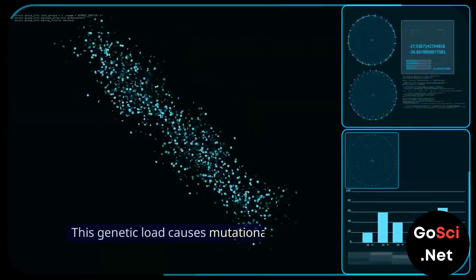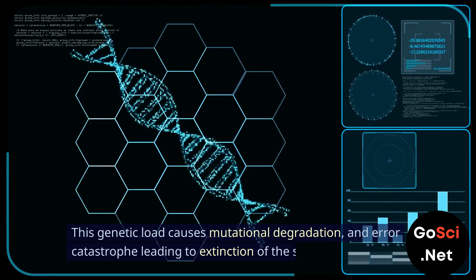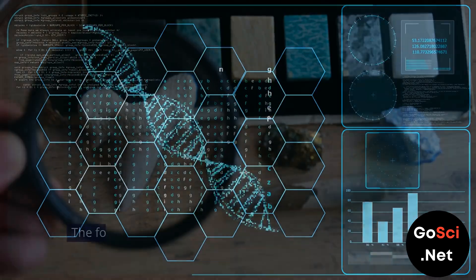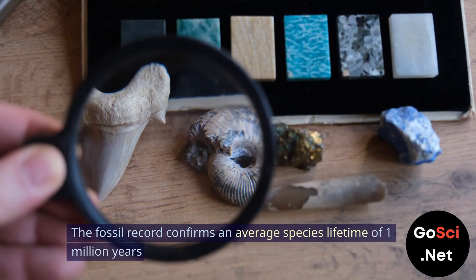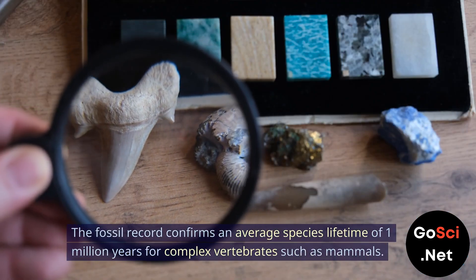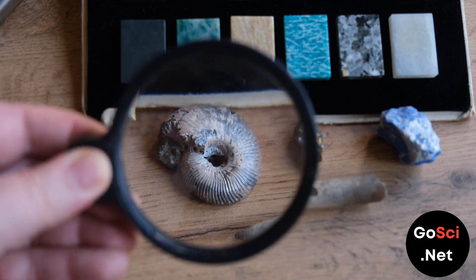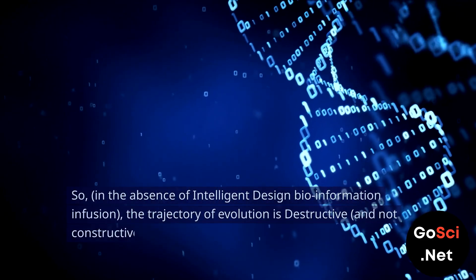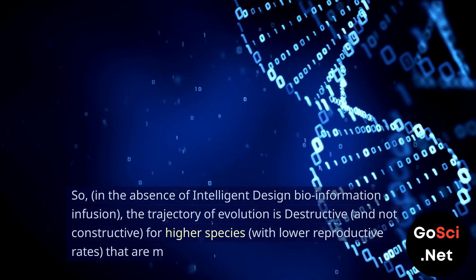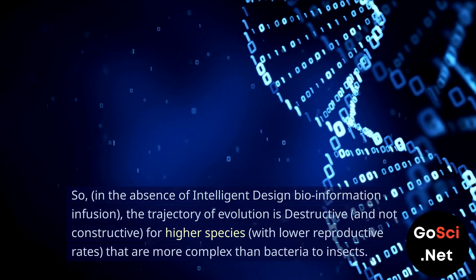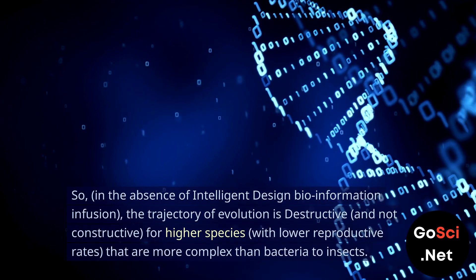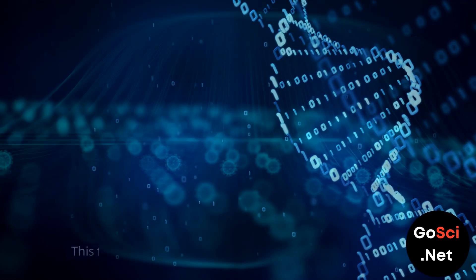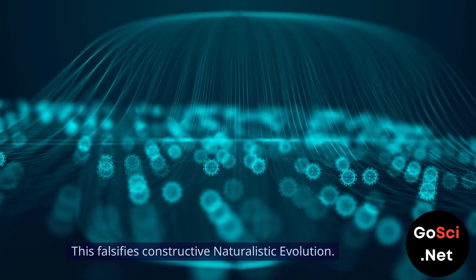This genetic load causes mutational degradation and error catastrophe, leading to extinction of the species over time. The fossil record confirms an average species lifetime of 1 million years for complex vertebrates such as mammals. So, in the absence of intelligent design bio-information infusion, the trajectory of evolution is destructive and not constructive for higher species with lower reproductive rates that are more complex than bacteria to insects. This falsifies constructive naturalistic evolution.